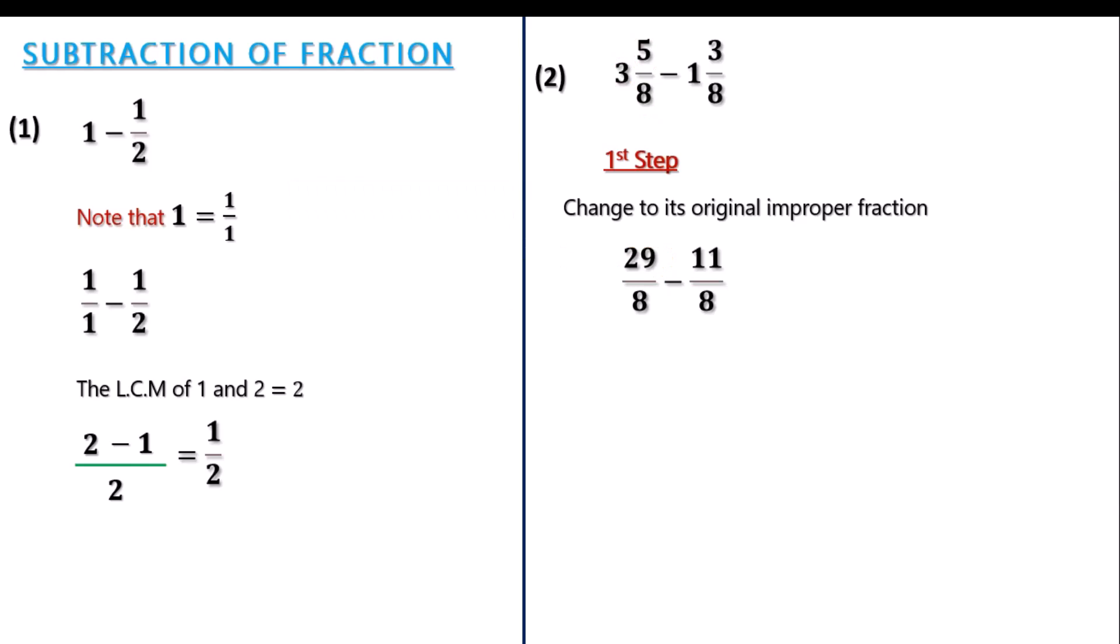Minus on the second fraction, you are going to multiply 8 multiplied by 1, which will give us 8, then add it to the numerator, which is 3, which will give us 11. So you have 11 over 8. Now we have the improper fraction, which is the original form. The next thing to do is the LCM between the two values, which is 8 and 8, is still 8.